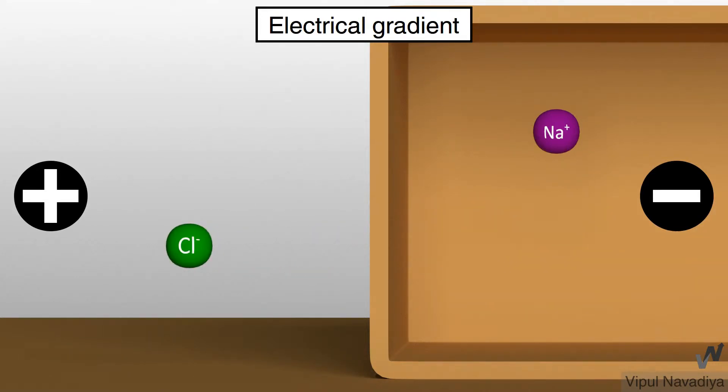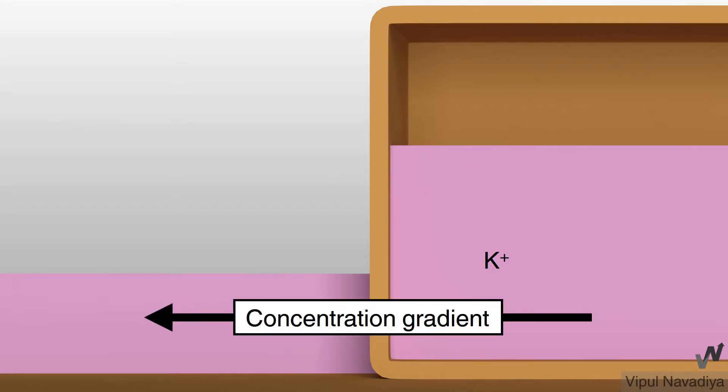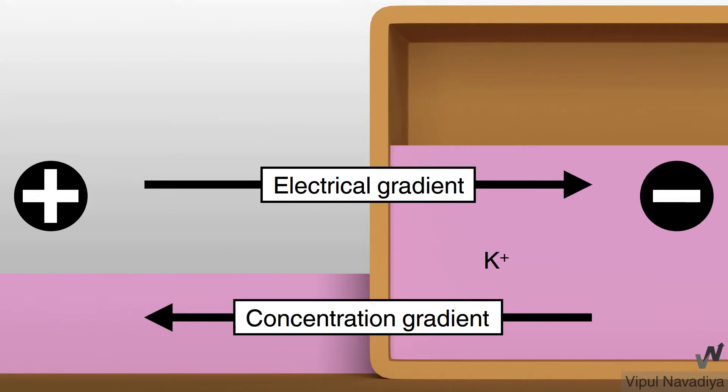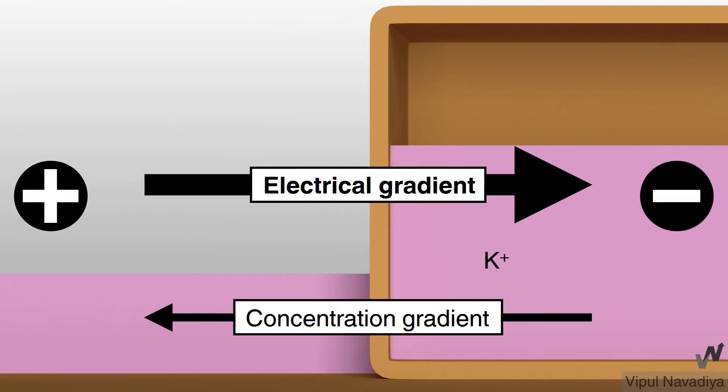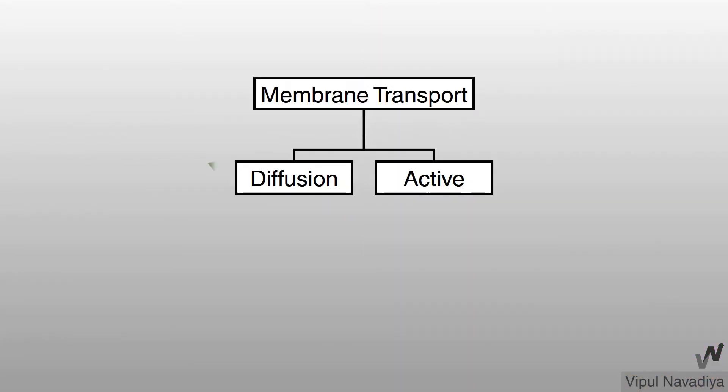Now, net driving force for charged molecules is decided by sum of electrical and concentration gradient. Let's take example of potassium to understand this. Its concentration is higher inside than outside. So, concentration gradient is favoring its exit from the cell. But, potassium is a positively charged ion. So, electrical gradient is favoring its entry into the cell. Here, two forces are in opposite direction. So, net movement will be decided by stronger force. If concentration gradient is stronger, ions will move from inside to outside. And, if electrical gradient is stronger, ions will move from outside to inside. If both are equal, there won't be any movement. This was diffusion.